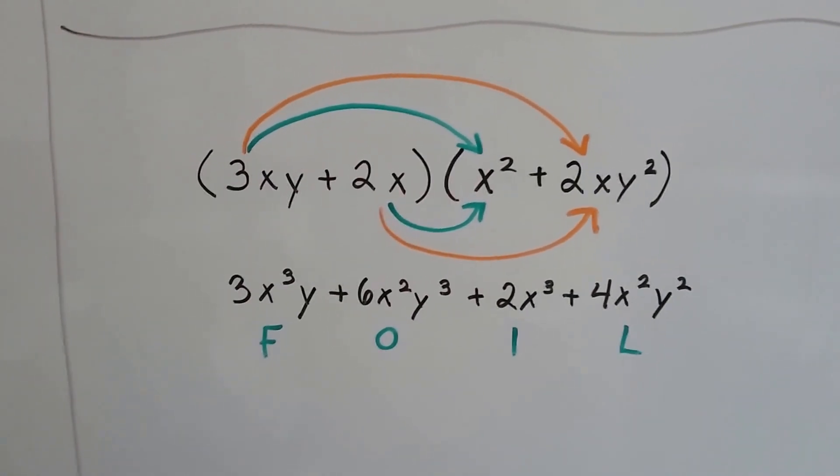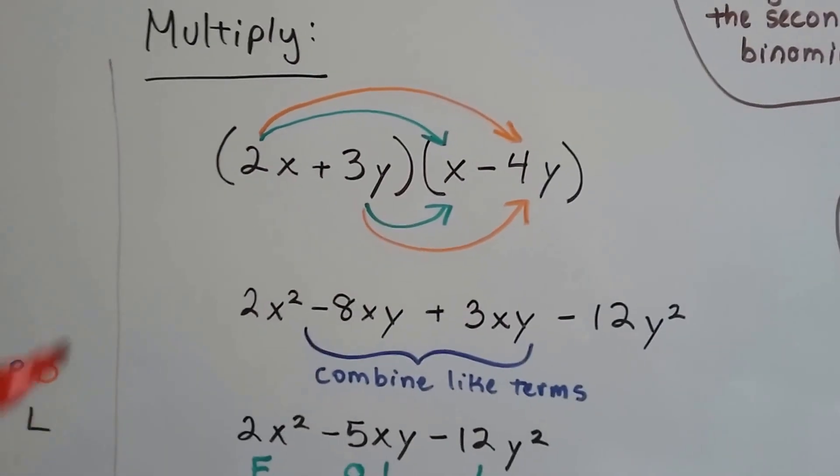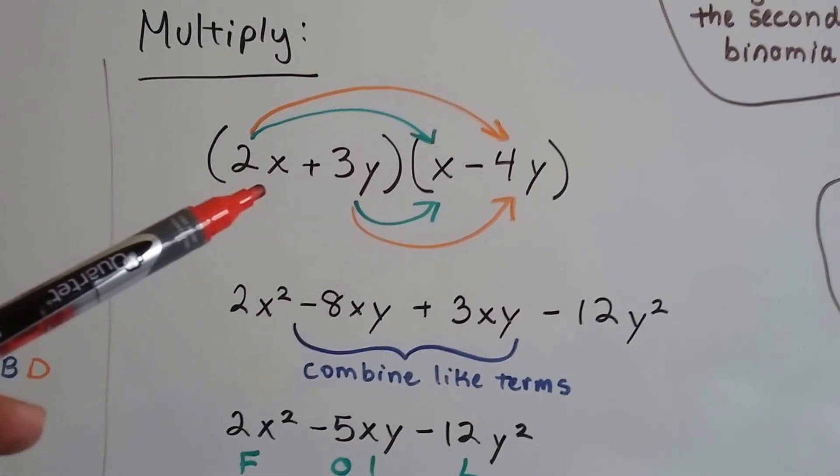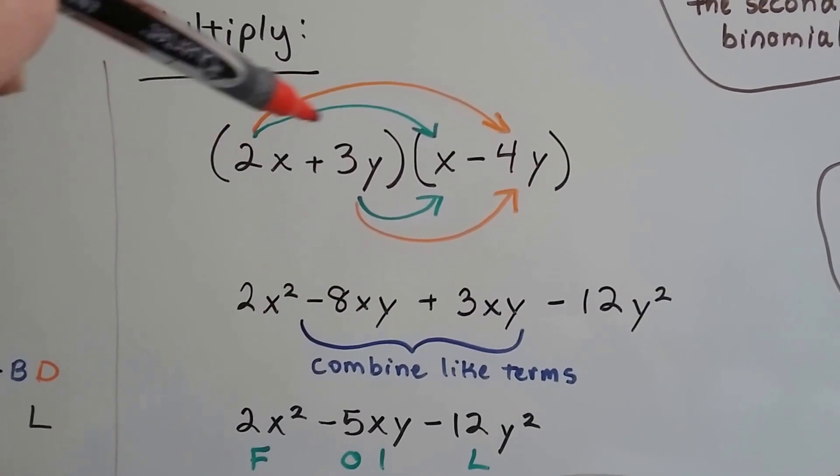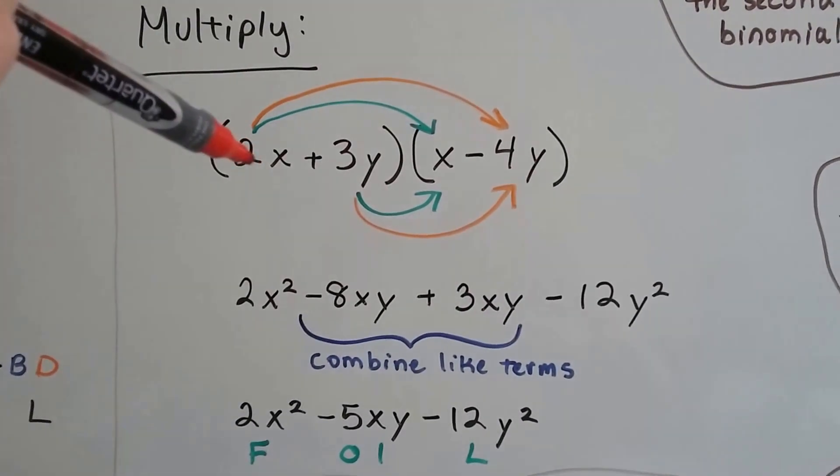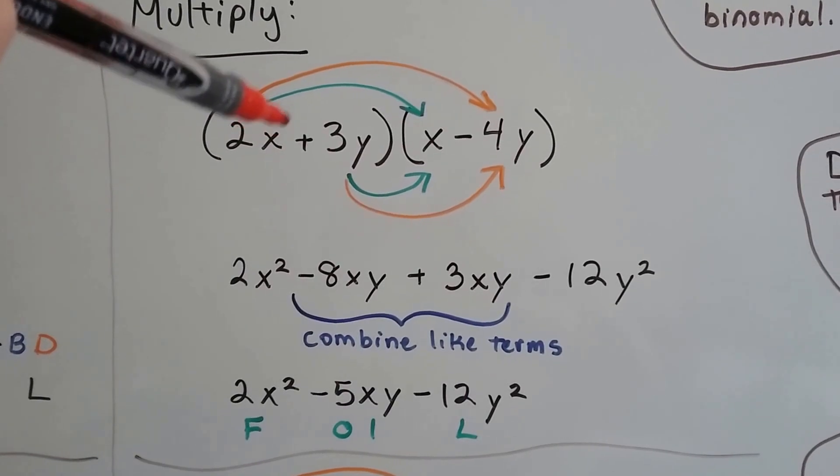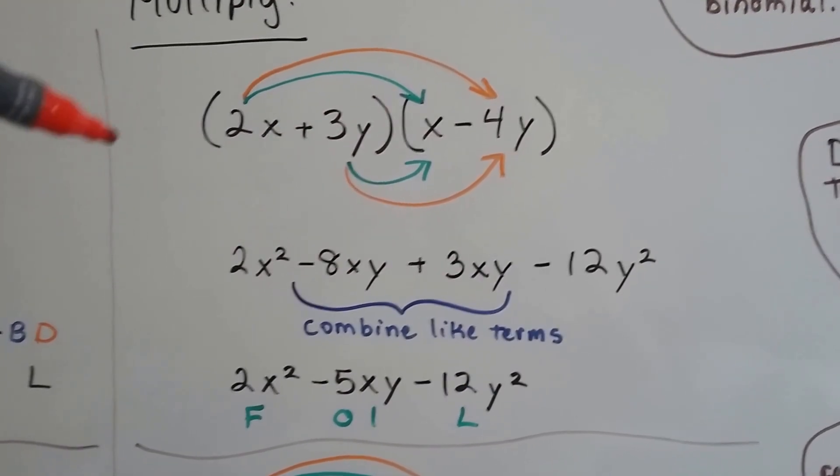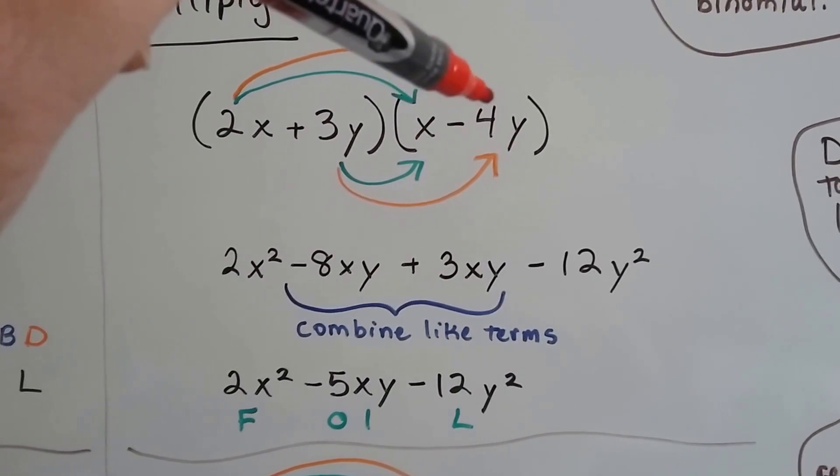We did this last year in Algebra 1. Let's try another one. I hope this is bringing back your memory from last year. So we've got 2x plus 3y times x minus 4y. We're going to do the first term to the first term. And 2x times x is going to give us a 2x squared because there's a little one exponent and a little one exponent that we're going to add together to get a two exponent. Now we're going to do 2x times a negative 4y.